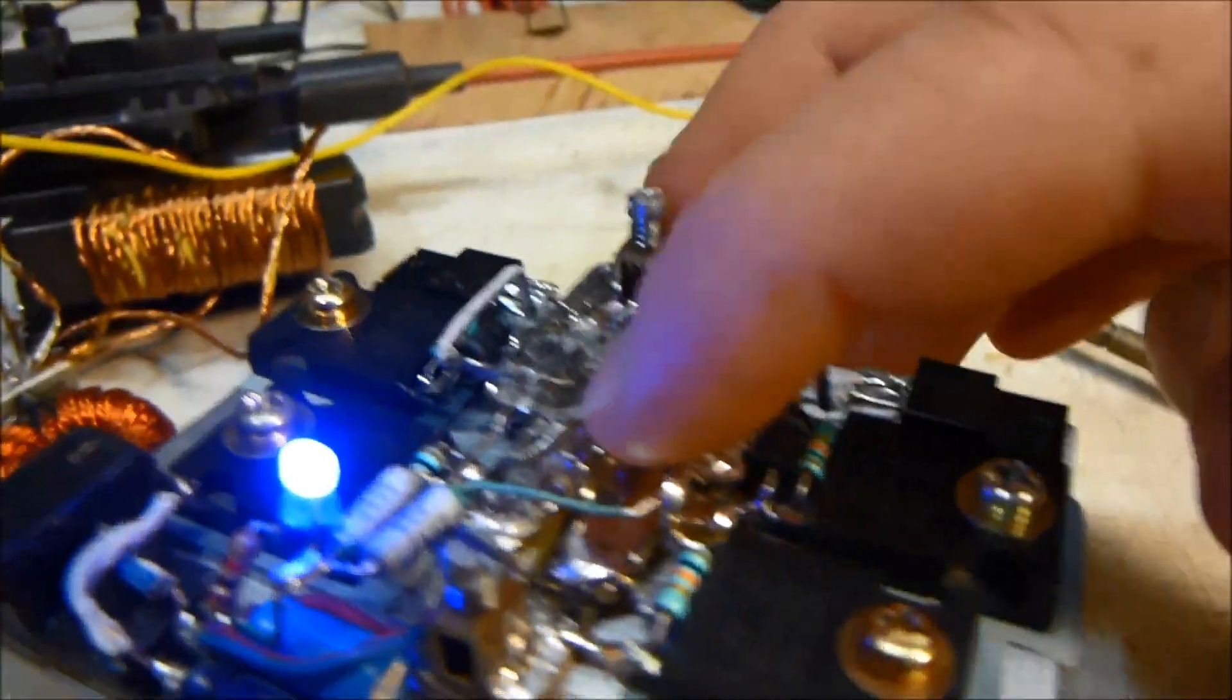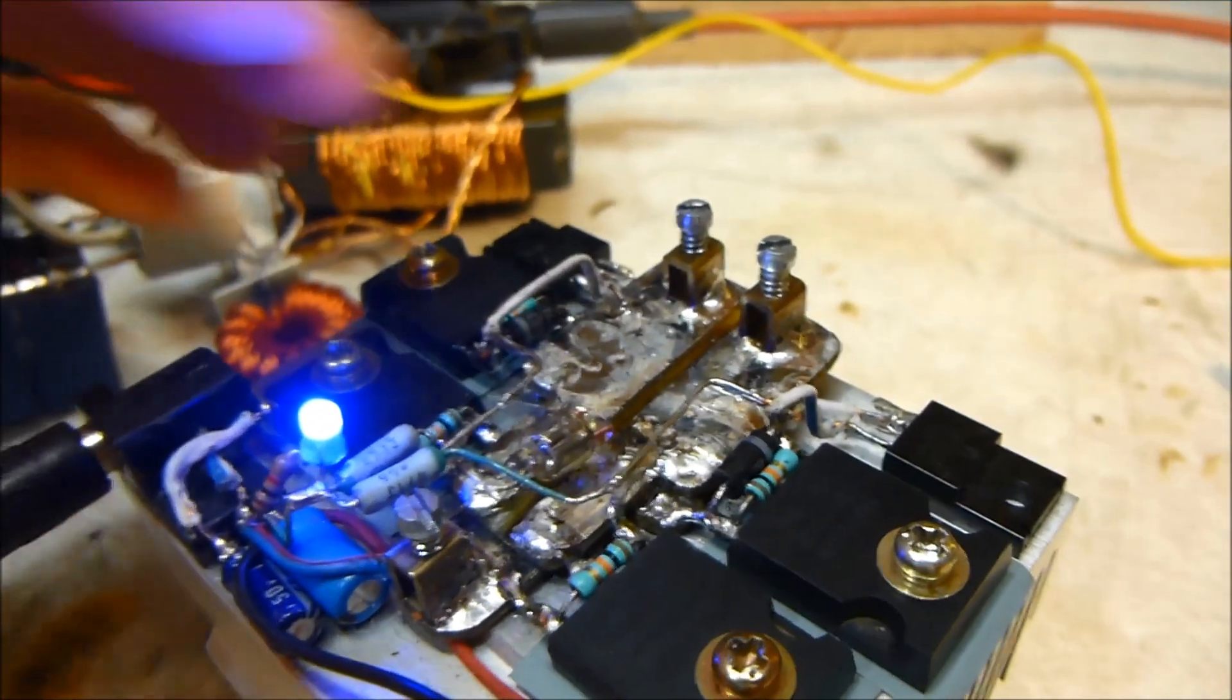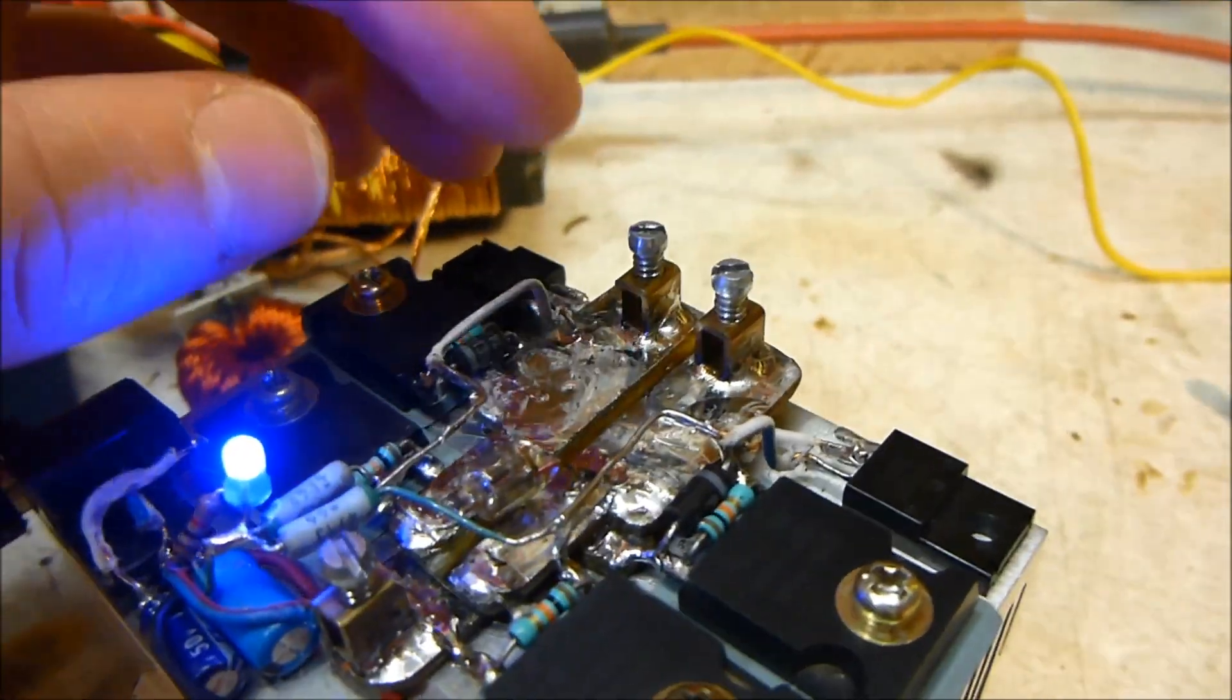We have a little neon light bulb there, just to protect it from back spikes. I don't know if it really works, it mainly is just there to indicate when there is a large voltage on the output.